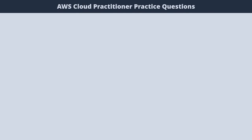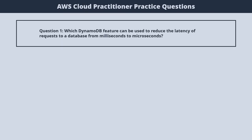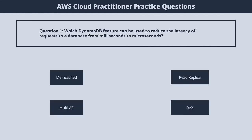Question 1. Which DynamoDB feature can be used to reduce the latency of requests to a database from milliseconds to microseconds? 1. Memcached. 2. Multi-AZ. 3. Read Replica. 4. DAX. The correct answer is 4. DAX.